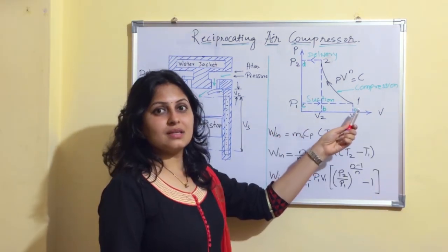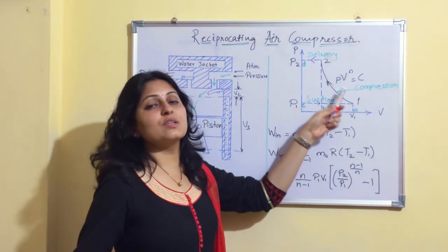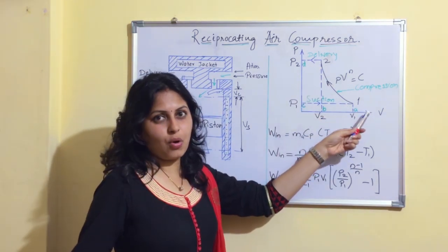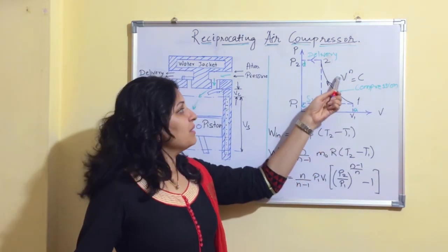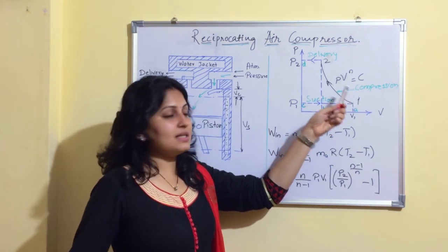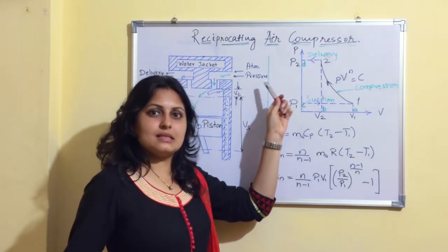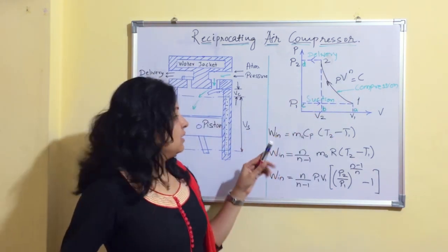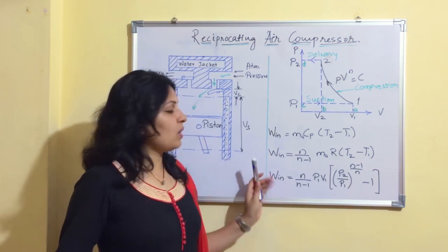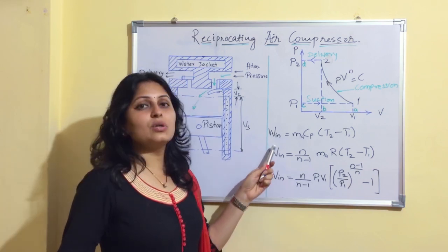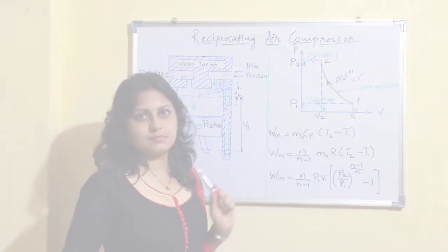Process 1 to 2 is polytropic compression, which follows the law PV raised to n equals constant. Process 2 to D is the delivery process. We can also see important formulas to find the indicated work input to the compressor.